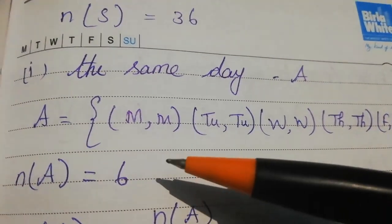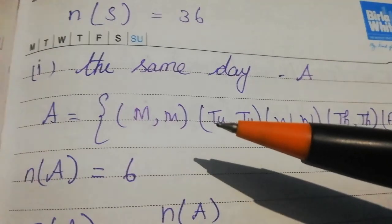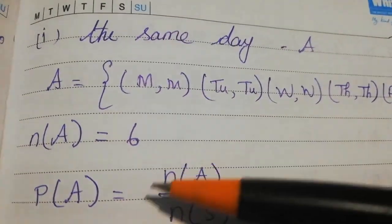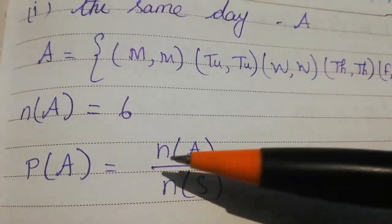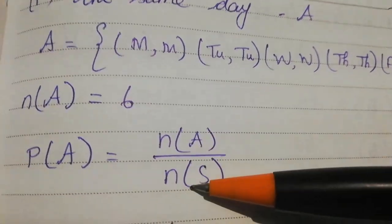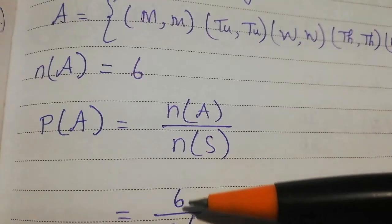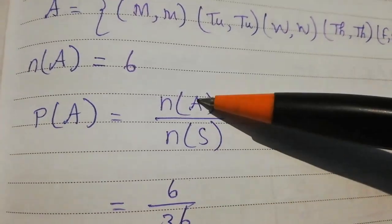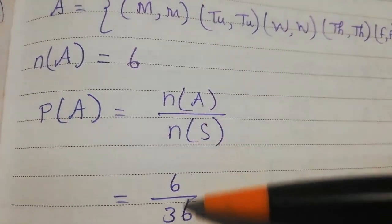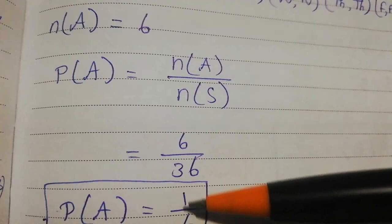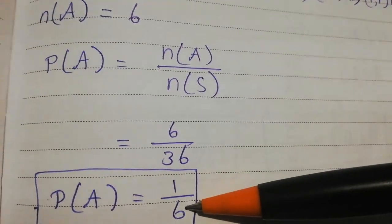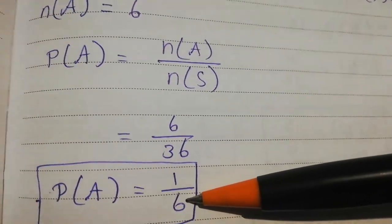What is the probability? P(A) is equal to N(A) divided by N(S). N(A) is 6, so P(A) = 6/36 = 1/6.